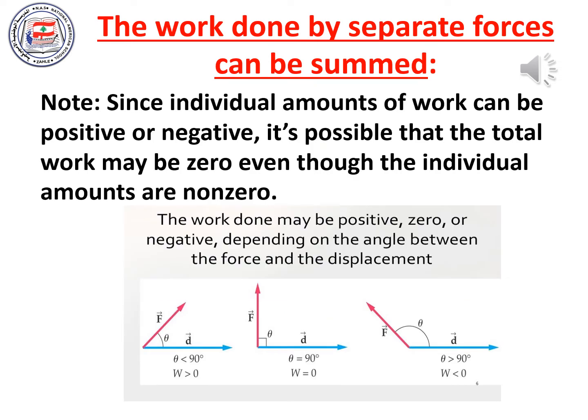Note: since individual amounts of work can be positive or negative, it's possible that the total work may be zero even though the individual amounts are non-zero. Work is negative if the angle between force and displacement is greater than 90 degrees, positive if the angle is less than 90 degrees, and zero if the angle equals 90 degrees. So when we add the work done by separate forces, the total amount of work may be zero even if the individual amounts are non-zero.